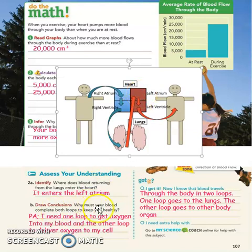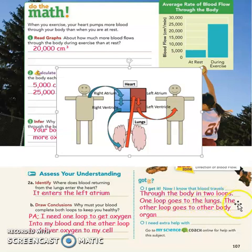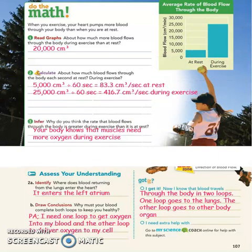Letter b: draw a conclusion — why must your blood complete both loops to keep you healthy? The possible answer is: I need one loop to get oxygen into my blood, and the other loop to deliver oxygen to my cells and muscles. To summarize: blood travels through the body in two loops — one loop goes to the lungs and the other goes to the body organs. If you have questions, send them via WhatsApp or Classera. Thank you for listening!